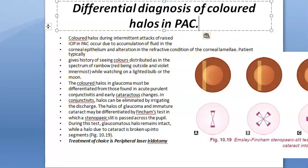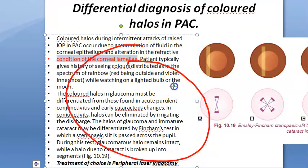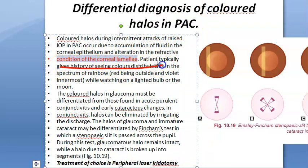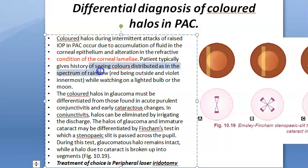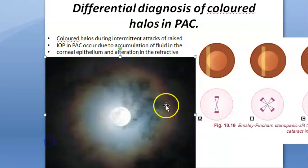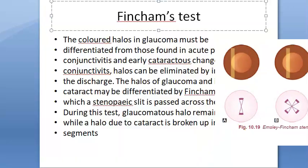In the differential diagnosis of colored halos in primary angle closure, raised intraocular pressure affects the cornea — specifically causing refractive alteration in the corneal lamellae and accumulation of fluid in the corneal epithelium. The patient sees colors distributed as in the spectrum of a rainbow while watching a light bulb or even the moon.